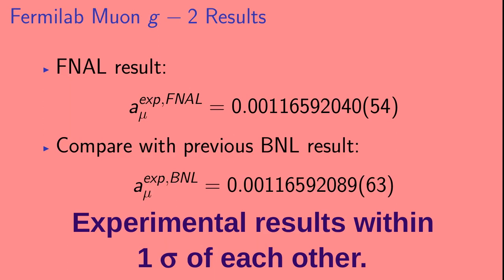They differ by 49 in the last two digits, while the uncertainty in the last two digits is 54 for the Fermilab result and 63 for the Brookhaven result. So the two results agree with each other very well.